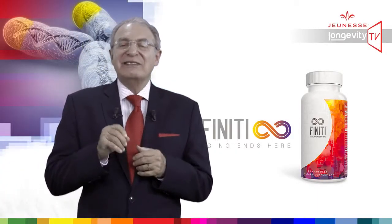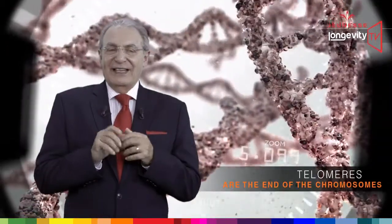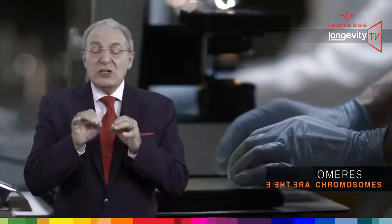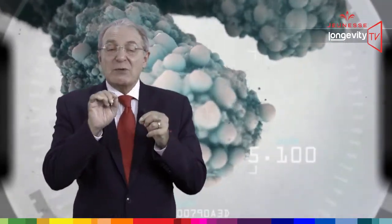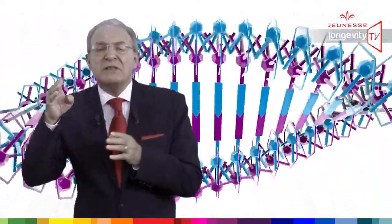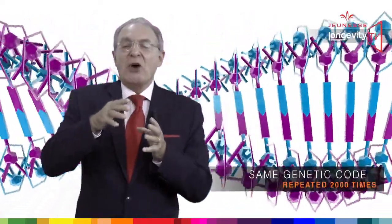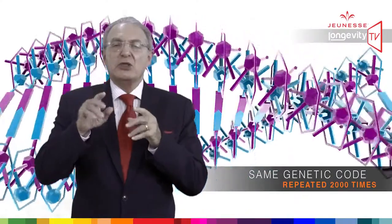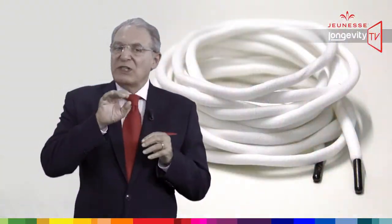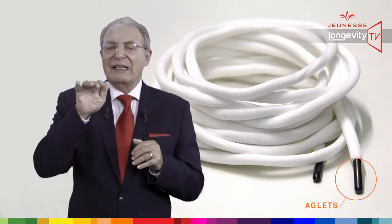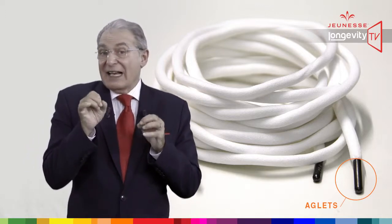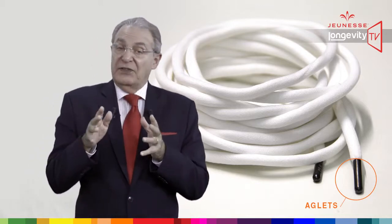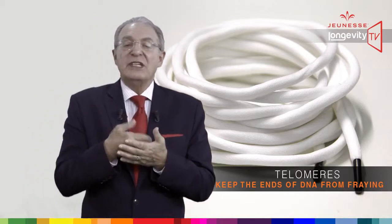Have you heard about telomeres? Probably not. Telomeres are at the end of the chromosome — they are here to protect our DNA. They are also made of DNA, but the sequences forming telomeres are repetitive DNA, meaning they are made of the same genetic codes repeated two thousand times. One way to describe telomeres is to compare them to aglets — the plastic caps at the end of shoelaces. Just as aglets keep shoelaces from falling apart, telomeres keep the ends of DNA from fraying.